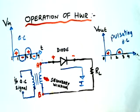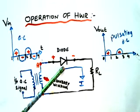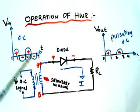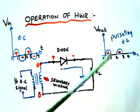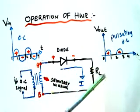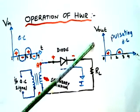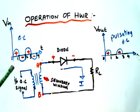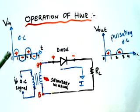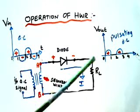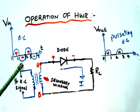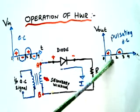Before going to full wave rectifier we will recall some important points of half wave rectifier. Half wave rectifier consists of a single diode. Input is given to this diode through a transformer, and output is obtained across the load resistor RL. Input is a bidirectional signal and output is a unidirectional signal. For the positive half cycle we get output, but for the negative half cycle we do not get output.